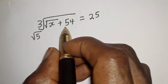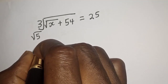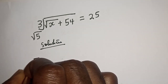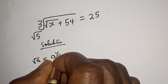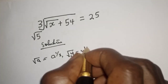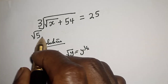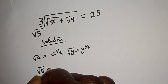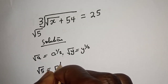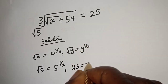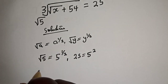Please don't forget to like, share, comment and subscribe. Note that square root of a equals a raised to power one over two. Also, square root of y equals y raised to power one over two. Working with this: square root of 5 is equal to 5 raised to power one over two, and 25 is equal to 5 squared.